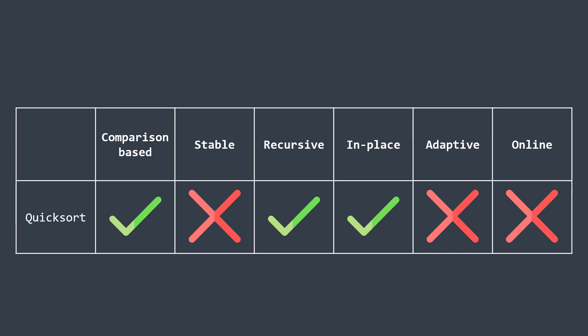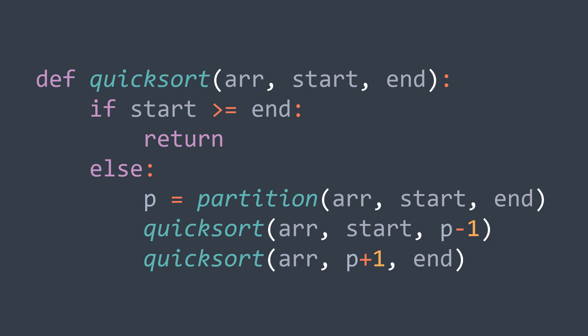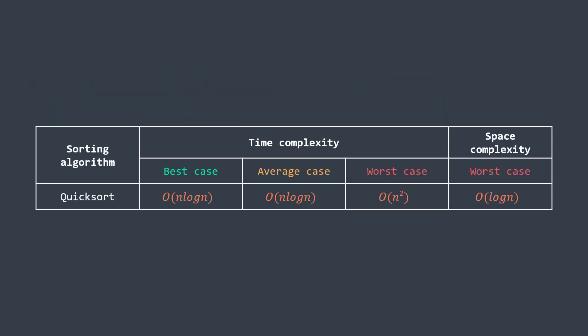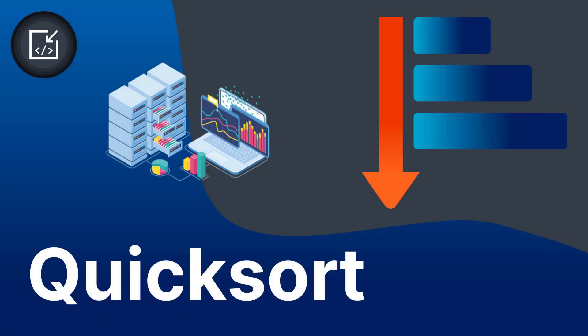To recap: quicksort is a sorting algorithm that chooses a pivot, puts elements smaller than the pivot in the left part and elements greater in the right part, then recursively sorts both. It has O(n log n) time complexity in the best and average case, and O(n²) in the worst case. The space complexity is O(log n) due to the call stack. Even though quicksort has O(n²) worst-case time complexity, it is still considered one of the fastest comparison-based sorting algorithms. I hope you now understand how the quicksort algorithm works — please share the video, subscribe to the channel, and see you in the next one.